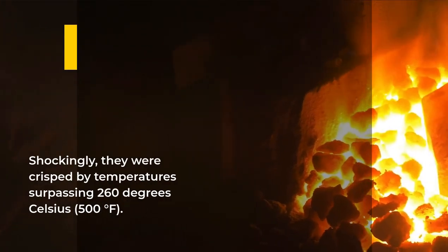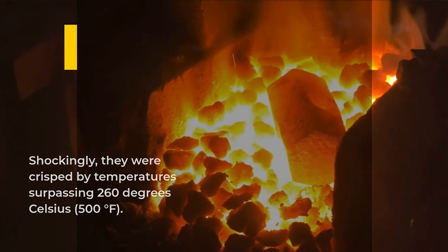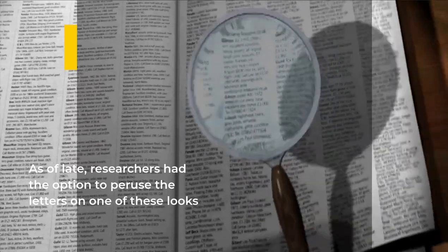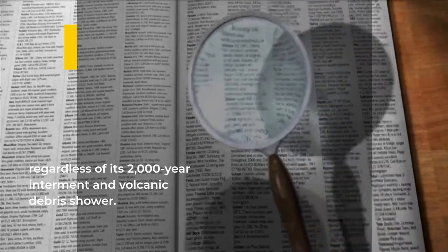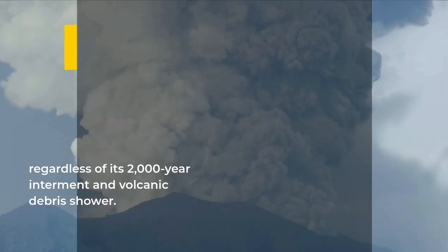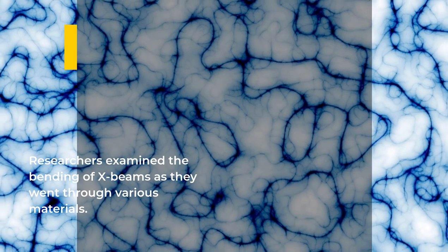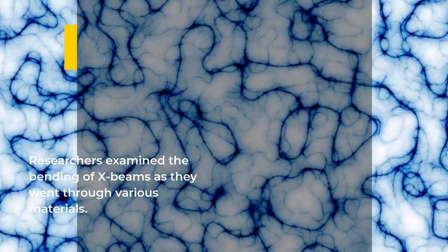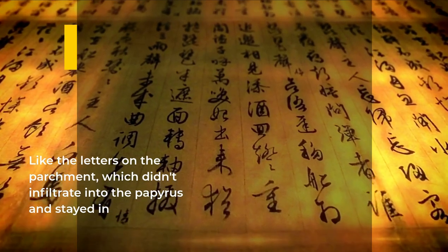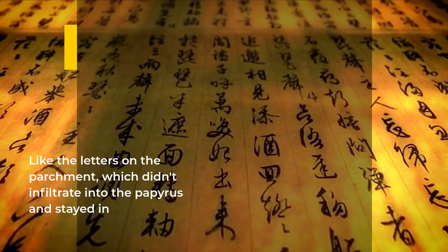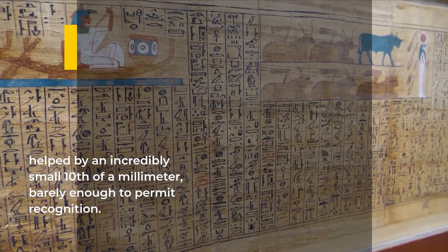Recently, researchers were able to read the letters on one of these scrolls despite its 2,000-year burial and volcanic ash shower. Researchers examined the bending of X-rays as they went through different materials, like the letters on the scroll, which didn't penetrate into the papyrus and remained raised by an extremely small tenth of a millimeter.